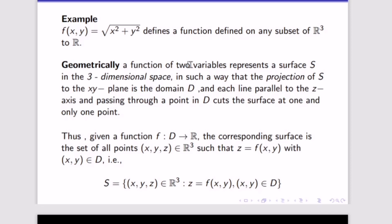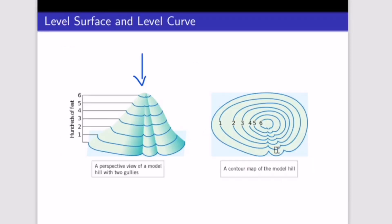The corresponding surface is the set of all points (x, y, z) that are elements of R³, since we have three variables. This means z = f(x, y), so z becomes the dependent variable and x and y become the independent variables.